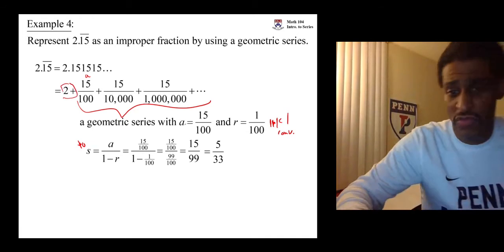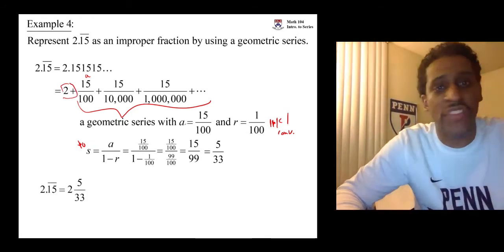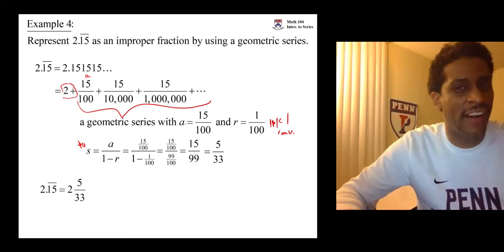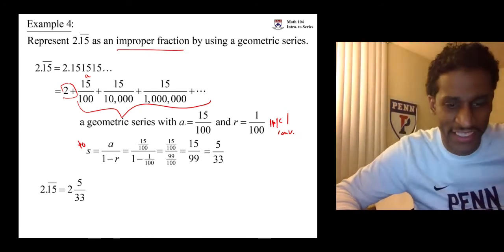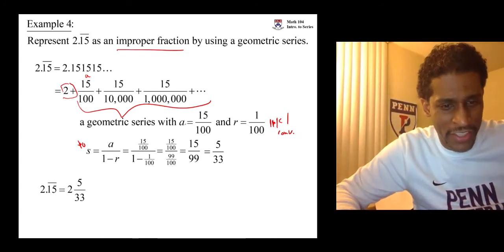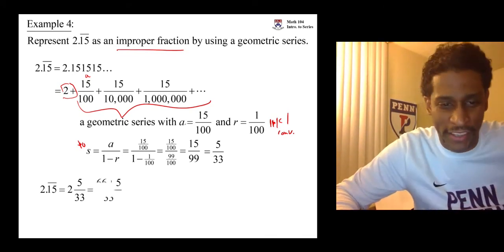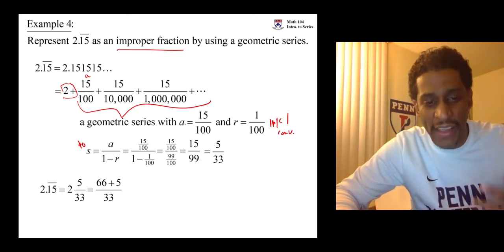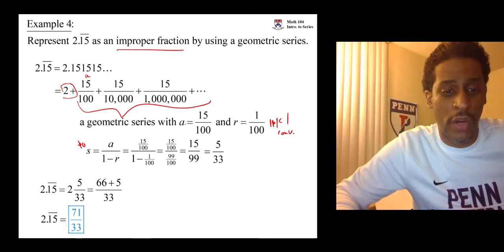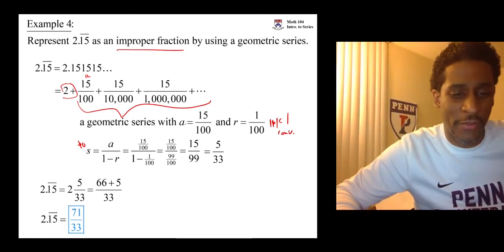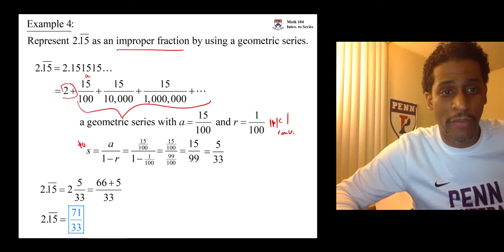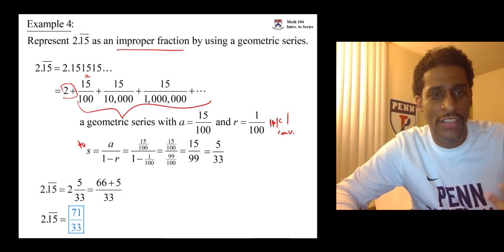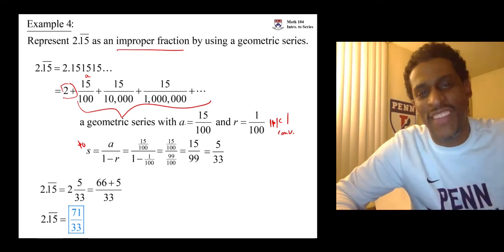So what about the two? That's fine — it's just two plus five over thirty-three, which is two and five thirty-thirds. It's a mixed number right now, but we're asked for an improper fraction. You remember how to do this: denominator times the whole number plus the numerator. Thirty-three times two is sixty-six, plus five gives us a numerator of seventy-one. So the answer is seventy-one over thirty-three. That fraction gives you 2.151515... repeating. Geometric series used to show how to write a repeating decimal as an improper fraction.